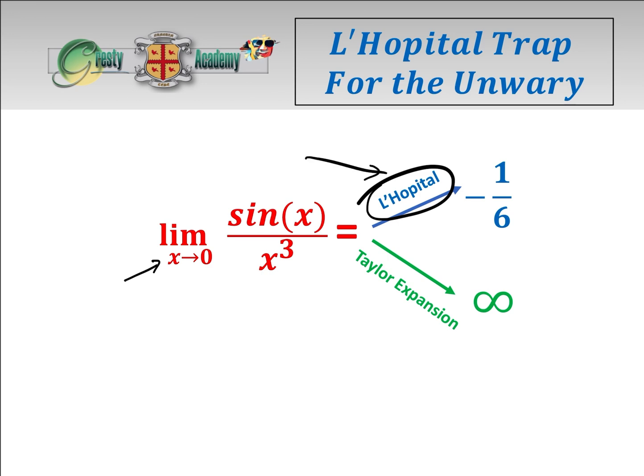If we use L'Hopital, and I'll put it in inverted commas because it is a L'Hopital trap for the unwary, so clearly this isn't the right answer, you get minus a sixth. And if you use the Taylor expansion, you get infinity. So what is going on?